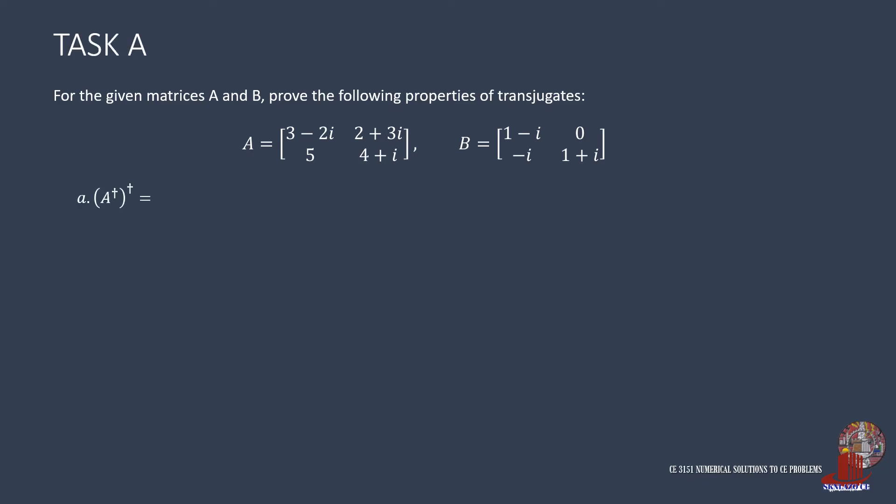Let's prove the first property: the transjugate of the transjugate of matrix A is still the original matrix A. To take the Hermitian transpose or transjugate of a matrix, two steps are involved. First is conjugate, which flips the sign of the imaginary number. In the example, bar A makes 3 minus 2i as 3 plus 2i, 2 plus 3i becomes 2 minus 3i, and 4 plus i turns into 4 minus i. Remember that conjugate only changes the sign of the imaginary number, not the real number.